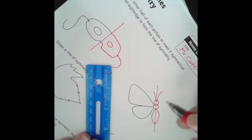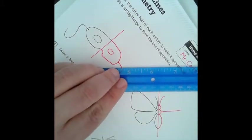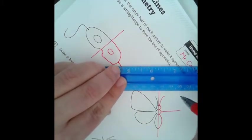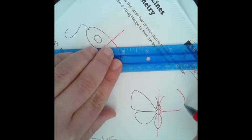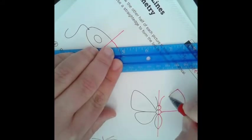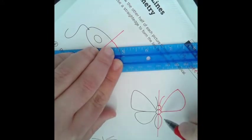I'm going to draw an antenna that looks like this. I'm going to draw the first wing. Line up the top here.